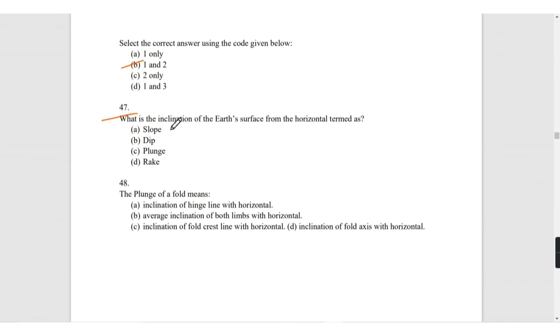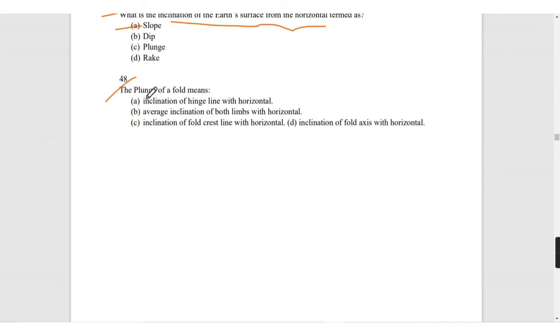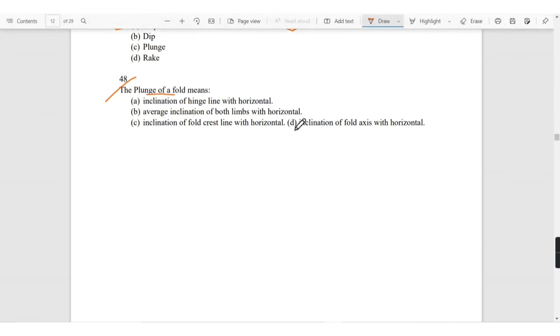What is the inclination of a surface from the horizontal termed as? It is slope. The plunge of fold means it is the inclination of fold axis with the horizontal.